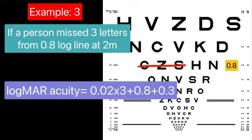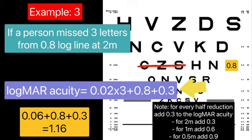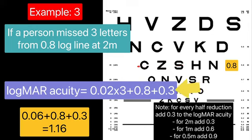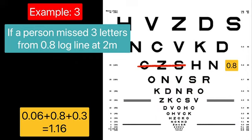Then you have to add the value of letter that the person has not read, which will be 0.06. Add 0.8 to 0.06, which will be 0.86. Now you also need to add 0.3 of 2m viewing distance. So the final LogMAR value will be 1.16.